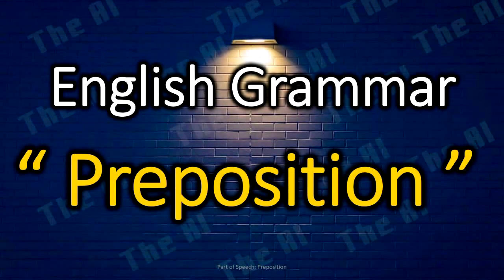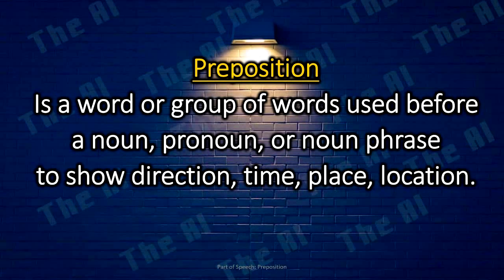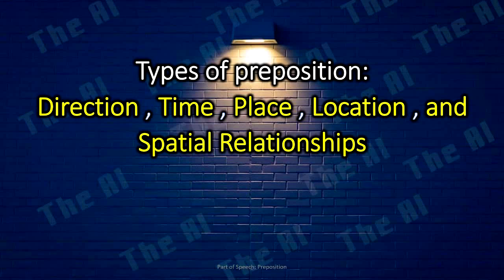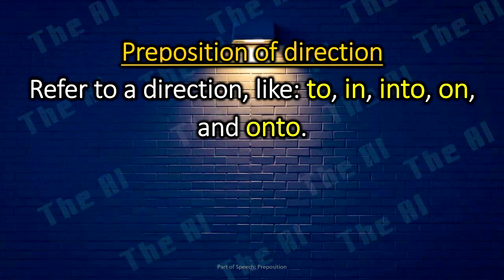Preposition. A preposition is a word or group of words used before a noun, pronoun, or noun phrase to show direction, time, place, or location. Types of prepositions include: direction, time, place, location, and spatial relationships. The preposition of direction refers to a direction, like to, in, into, on, and onto. For example: She drove to the store. Drive on the grass and park the car there.